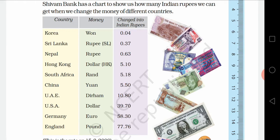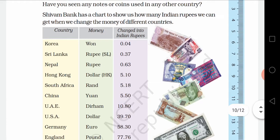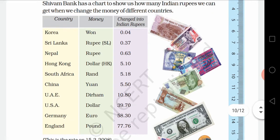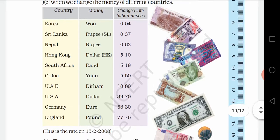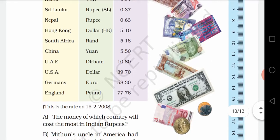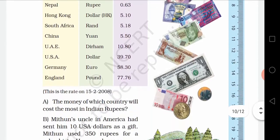If we change the currencies, the values are: 1 Korean won equals 0.04 Indian rupees. 1 Sri Lankan rupee equals 0.37 Indian rupees. 1 Nepali rupee equals 0.63 Indian rupees. 1 Hong Kong dollar equals 5 rupees and 10 paise. 1 South African rand equals 5 rupees and 18 paise. 1 Chinese yuan equals 5 rupees and 50 paise. These values are given in tabular form.